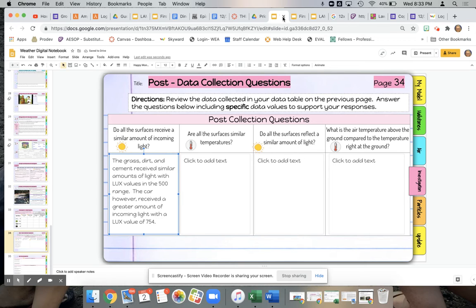So I have included specific data. I talked about the 500 range here and 754 here. I also named the specific surfaces when using those values. So I would say no.